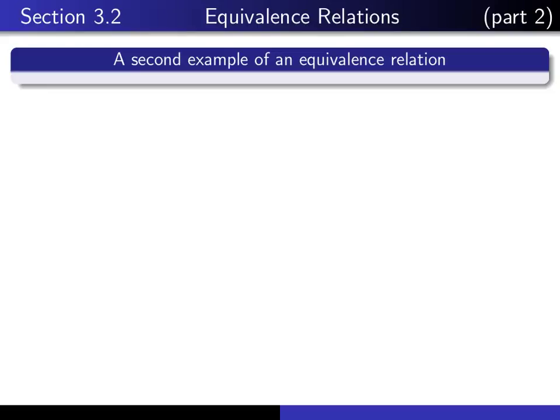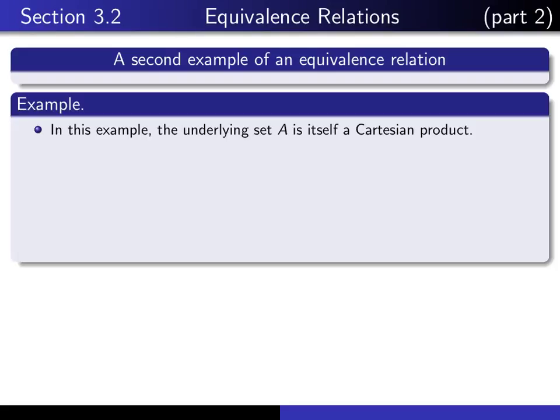This is the second of our series of lectures on equivalence relations. In this lecture, I'm going to give another example of an equivalence relation. This is quite an important example, but it looks a little bit different from the previous ones because the underlying set A is itself a Cartesian product.